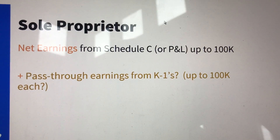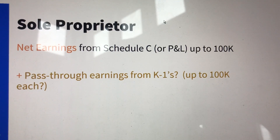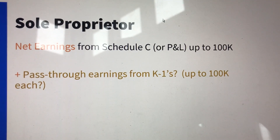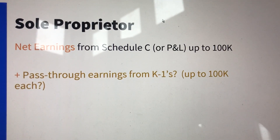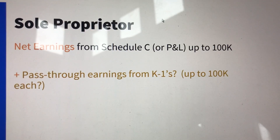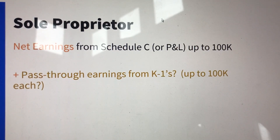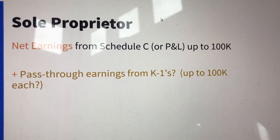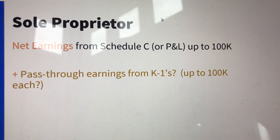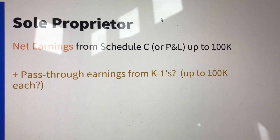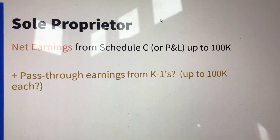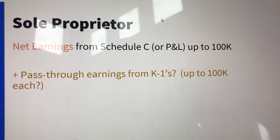If you have no employees or you're self-employed, what do you do with pass-through earnings from K-1s? Any pass-through self-employment earnings that come in — how do you include it? How do you apply the $100,000 limitation? I don't know the answer to that. It appears to me that you would take the $100,000 limitation, apply it to the Schedule C earnings and then also to the K-1, but I'm not sure. It could be an overall $100,000 limited self-employment earnings cap. Hopefully somebody will issue a clarification on that.